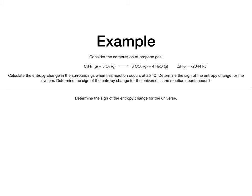Now we need to determine the sign of the entropy change for the universe. Delta S of the universe equals delta S of the system plus delta S of the surroundings. We found that delta S of the surroundings was a positive value, and we predicted delta S of the system to be a positive value. A positive value plus a positive value is always going to be a positive value, so delta S of the universe is greater than zero — positive.